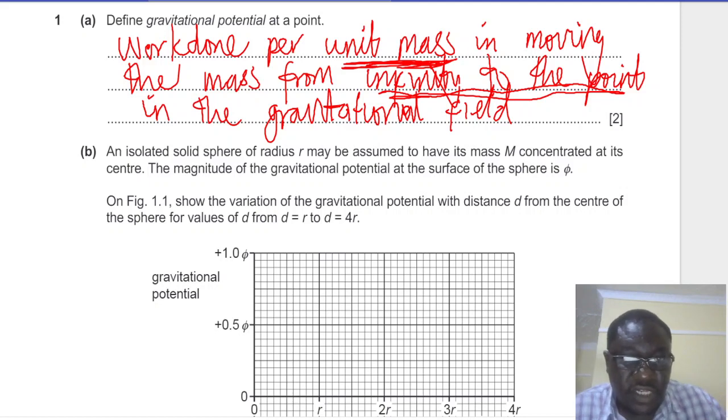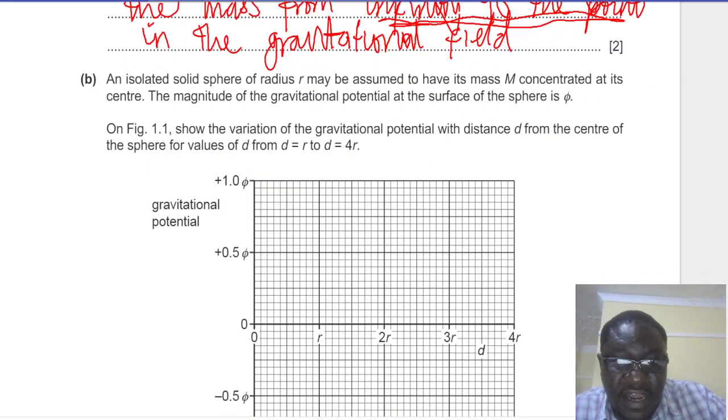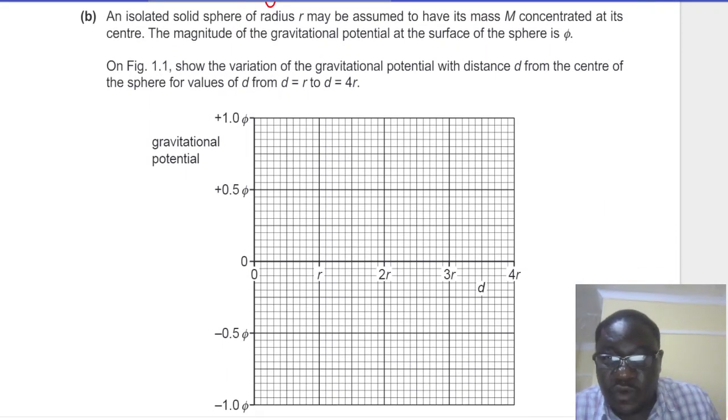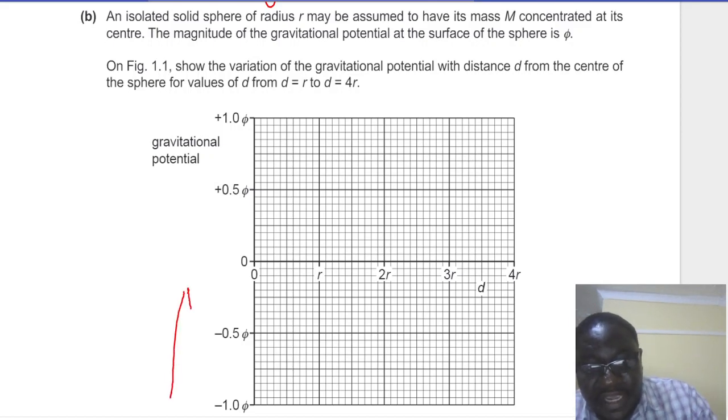Part 1b: an isolated solid sphere of radius r may be assumed to have its mass M concentrated at its center. The magnitude of the gravitational potential at the surface of the sphere is phi. On figure 1.1 show the variation of the gravitational potential with distance d from the center of the sphere for values of d from d equals r to d equals 4r. Now since the gravitational field is an attractive field, gravitational potential must be negative. So we expect our graph to occupy the negative quadrant there.